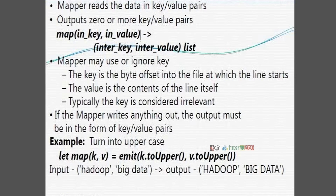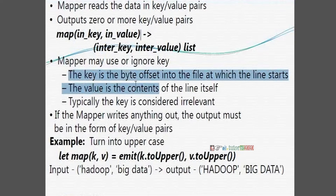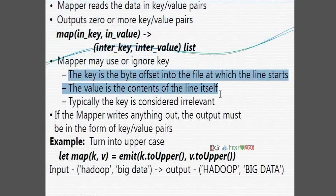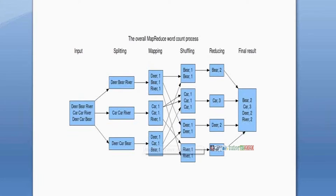How to decide what is the key and what is the value? Mappers may use or ignore a key. The key is a byte offset into the file at which the line starts from the position, and the value is the content of the line itself. The mapper reads the data from the data node by input splitting. What format it is reading depends on the input format — key-value pairs are decided based on the input format.